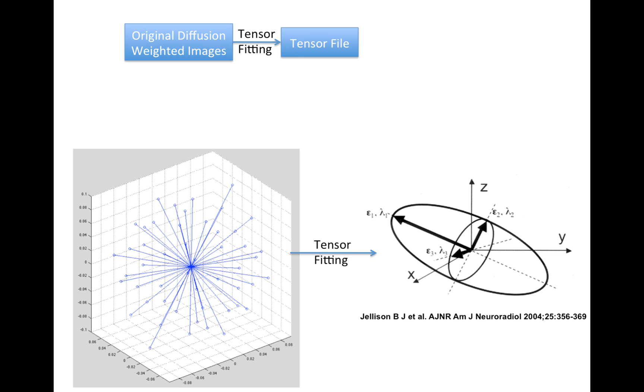And so now we have not only original diffusion-weighted image, which is at 25 dimensions, gradient dimensions. Now we've tensor-fitted it to 9 dimensions into this tensor shape.